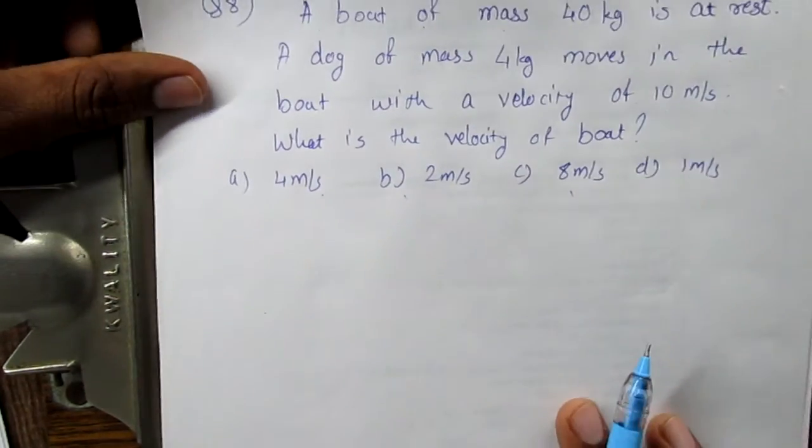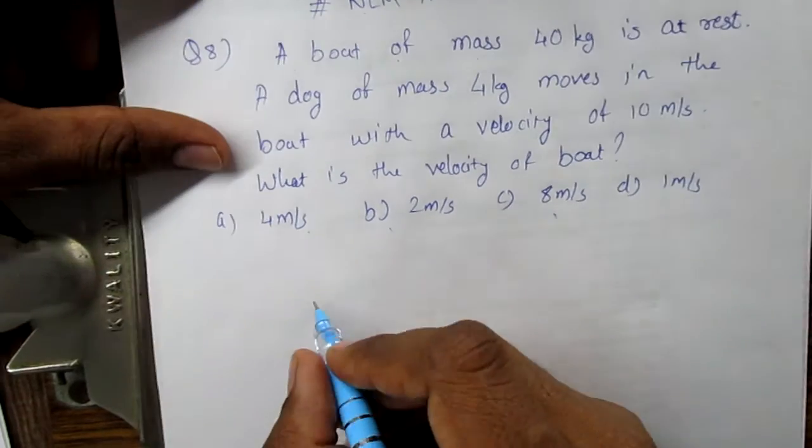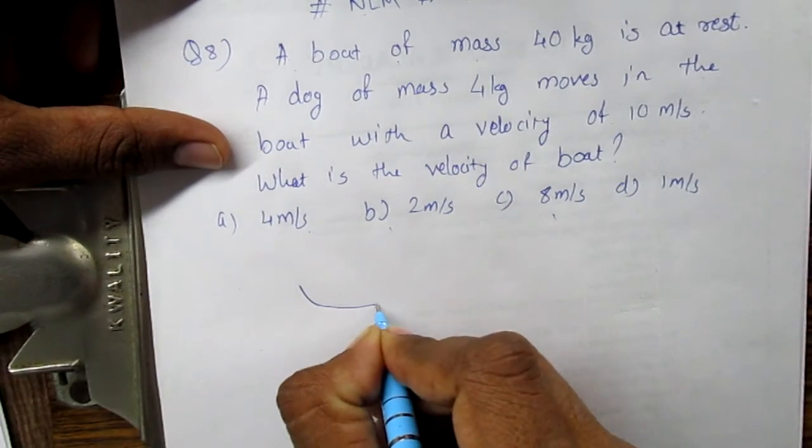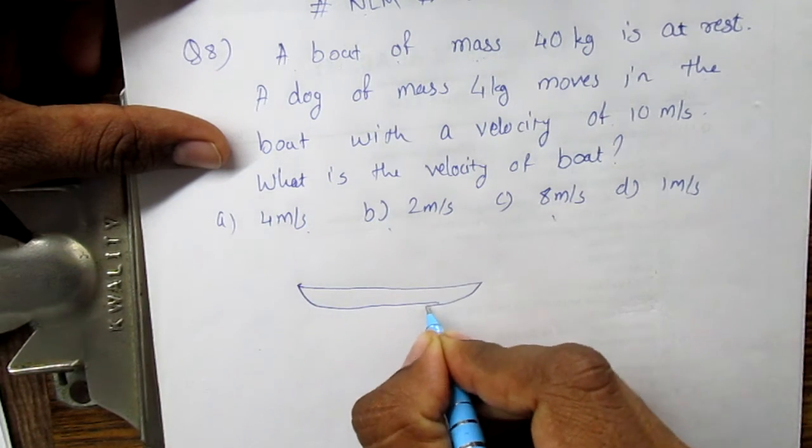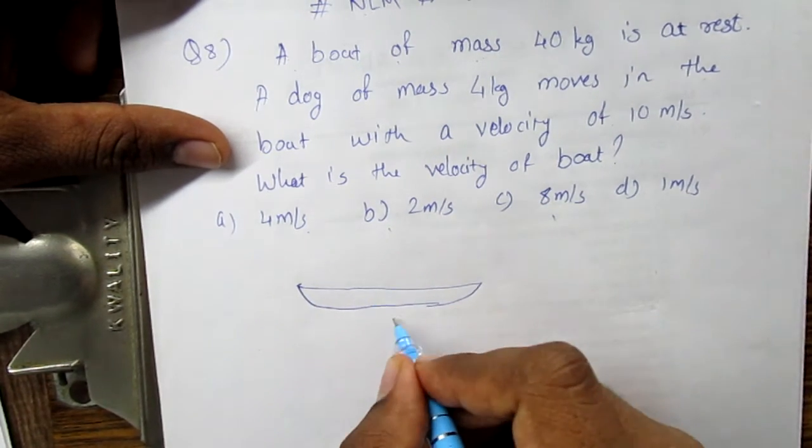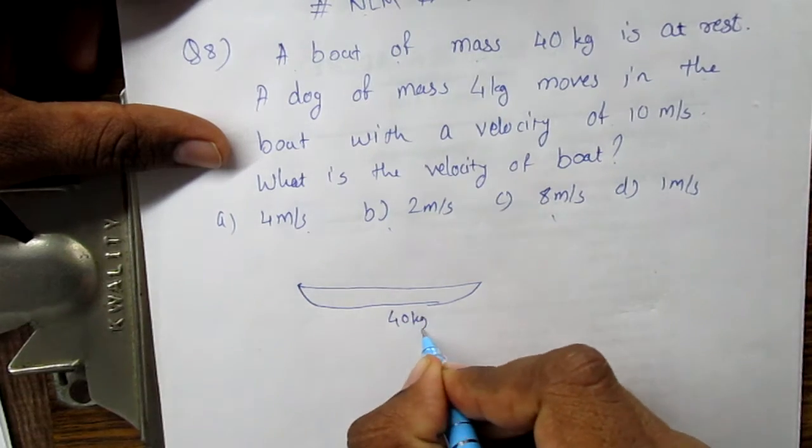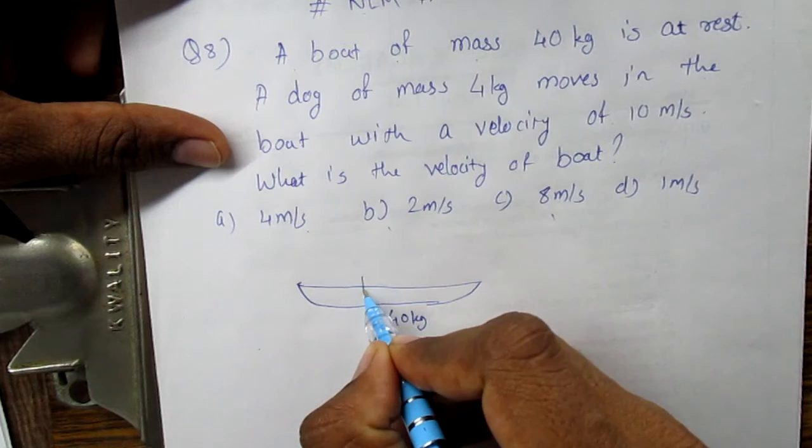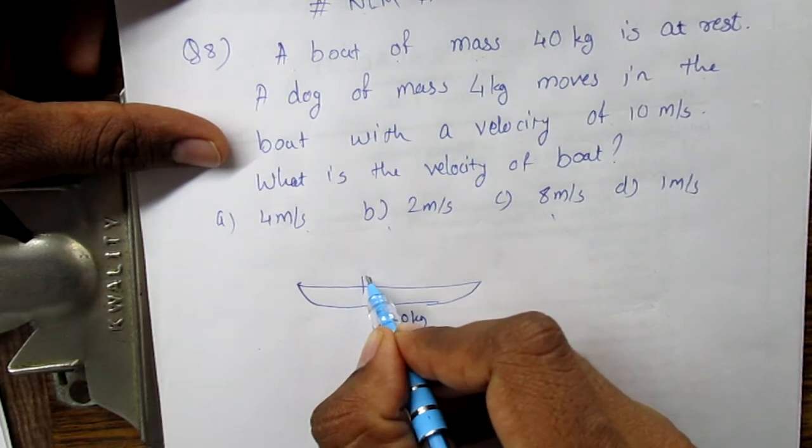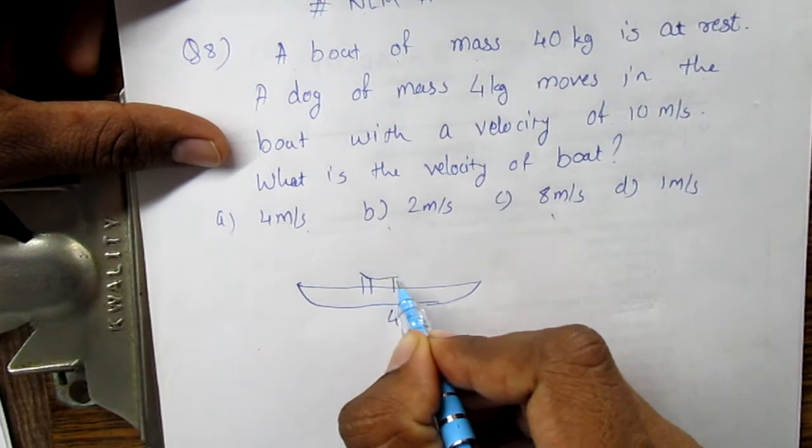So let us picture the question first. Let us imagine this is a boat, and this boat is of mass 40 kg. There is a dog on this boat.